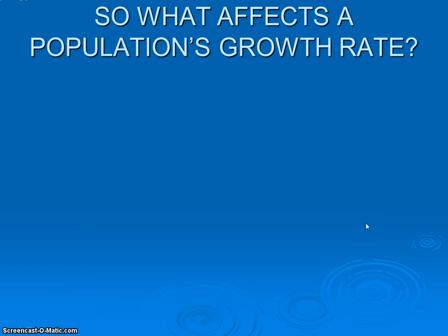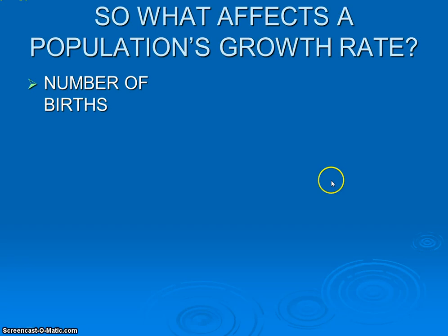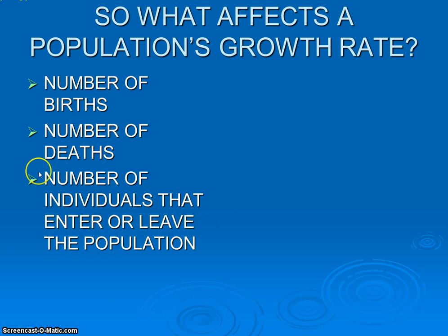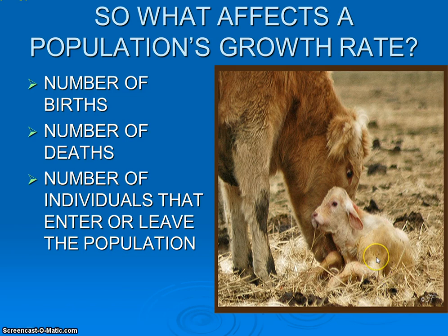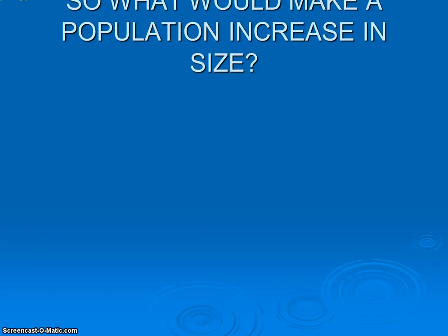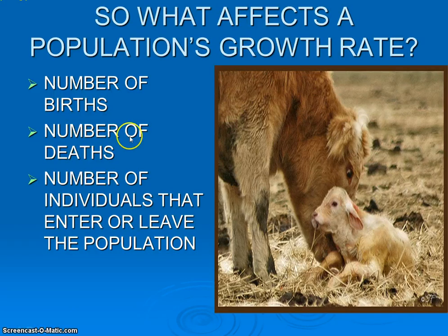What would actually affect a population's growth rate? What would cause it to go up or down? Really there are a couple of pretty simple, closely related factors: births, deaths, and migration. In terms of births, obviously that adds to the population — this newborn calf is plus one, our population has gone up. Deaths on the other hand would decrease it. Migration is unique because you can have a couple of different variations when you look at that.